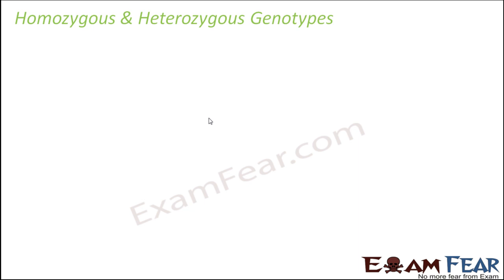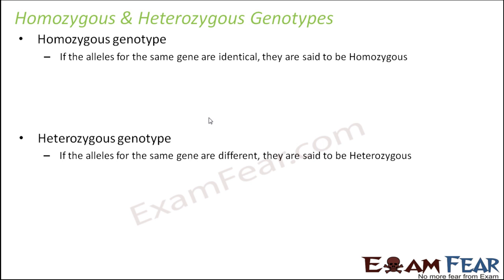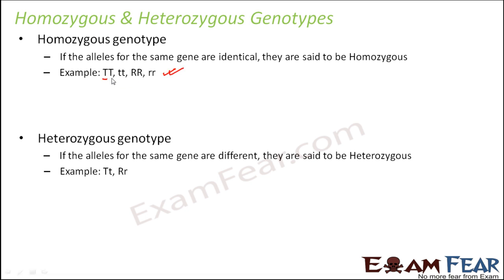Now let us see what are homozygous and heterozygous genotypes. We already know homologous and heterologous chromosomes, and homozygous and heterozygous organisms. Homozygous genotypes are where both alleles are identical — organisms with a homozygous genotype are also called homozygous organisms. Heterozygous genotypes have different alleles for the same gene. If an organism inherits exactly identical traits from both parents, it is homozygous. So TT and tt are homozygous because both alleles are identical. Capital T, small t has non-identical alleles, so it is a heterozygous genotype.